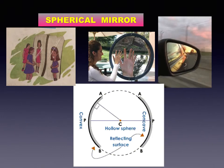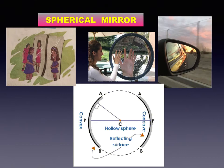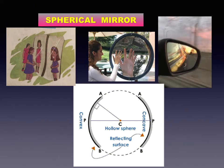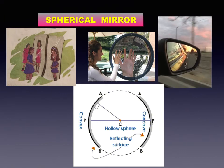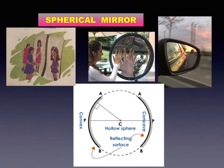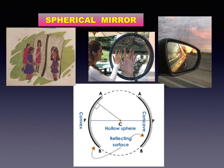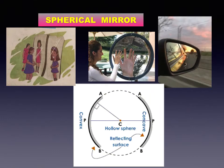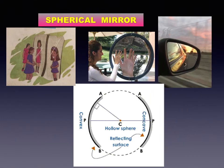Thus, there are two types of spherical mirrors. Concave mirror: if the inner surface of the spherical mirror is the reflecting surface, then it is called a concave mirror. If the outer surface of the spherical mirror is the reflecting surface, then it is called a convex mirror.